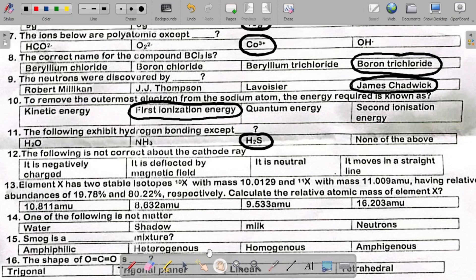Number 12 says the following is not correct about cathode ray. Number one, it is negatively charged. That's correct. Cathode ray is negatively charged. Number two, it is deflected by magnetic field, of course. Since it has charge, it will be deflected by magnetic field. Next one says it is neutral. This is not true. It is not neutral. So the answer here is it is neutral. No, cathode ray is not neutral.